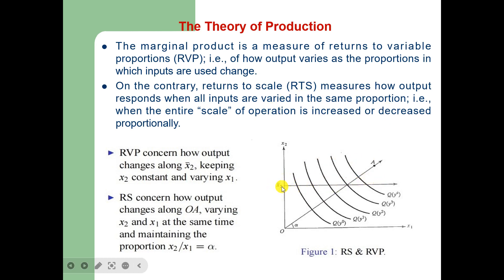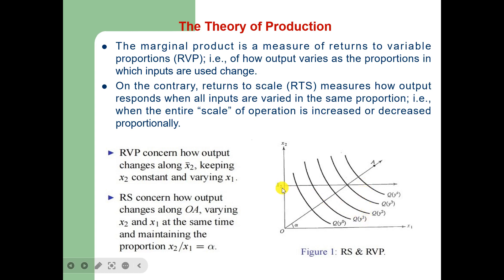For example, if we employ this much of x2 and this much of x1, then the level of output is given by y0. If we keep the amount of x2 constant but we increase the amount of input 1 up to this level, then the output level changes to y1. And finally, if we increase x1 up to this point and keep the amount of input 2 the same, then the output level produced is given by y4.